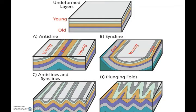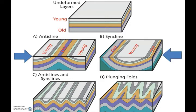We can also consider relative geologic age when looking at outcrops and trying to determine whether they are anticlines or synclines. In an anticline, the younger rock layers are found on the limbs of the fold, as seen on the geologic map on the top of the block diagram, while the older rock layers are found along the axis. In the case of a syncline, it's the opposite — older rock layers are found on the limbs, while the younger rock layers outcrop along the axis.